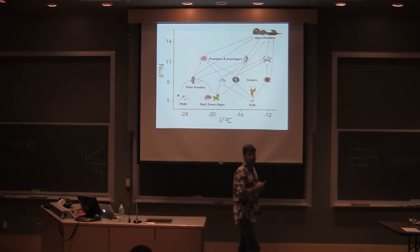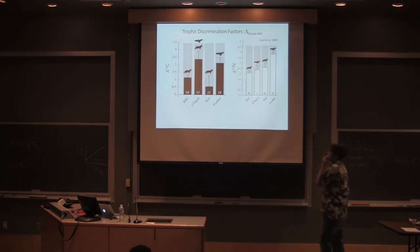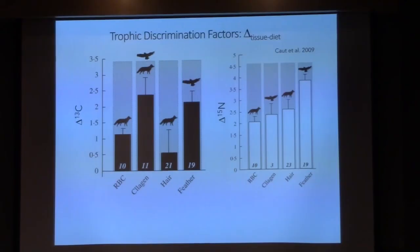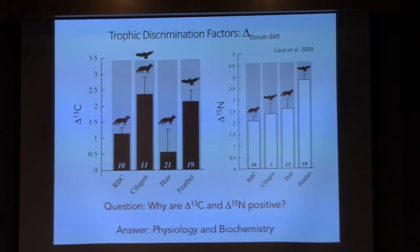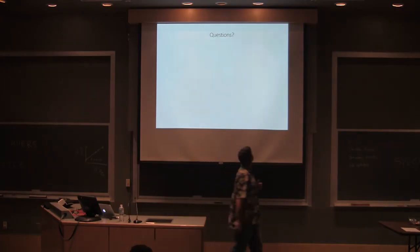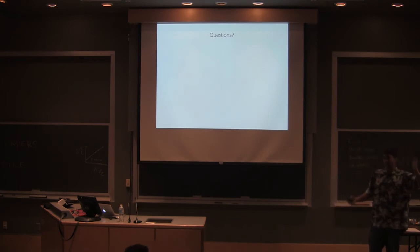So as I mentioned, trophic discrimination factors are generally positive. So why are they positive? That's what we're going to get into, and the answer of course is physiology and biochemistry. Anybody have any questions up to this point? I like how you guys just jump in. We shouldn't even have these pauses. Well we should, but you just ask, just keep doing that. You don't have to save your questions.